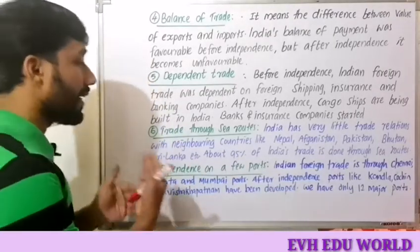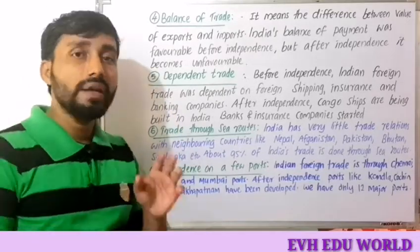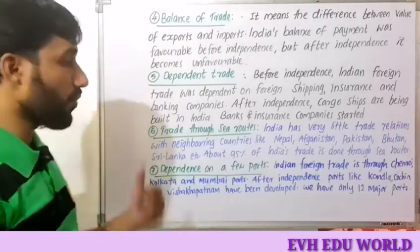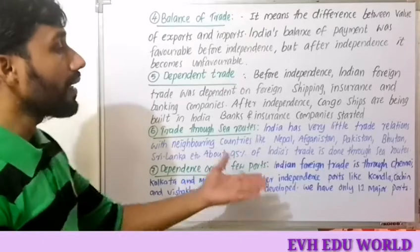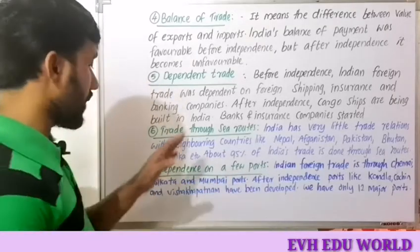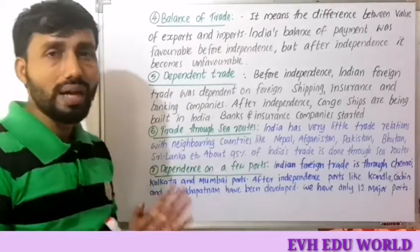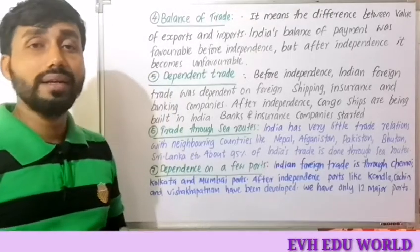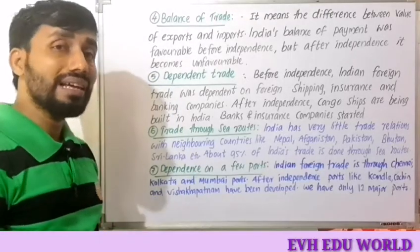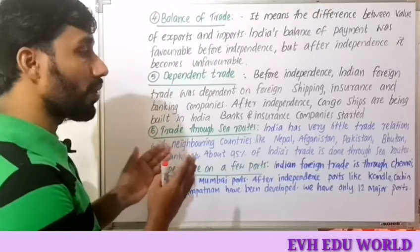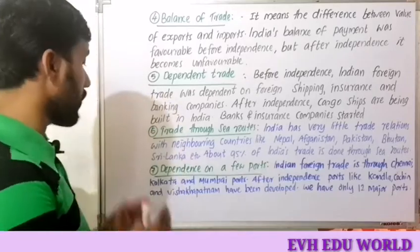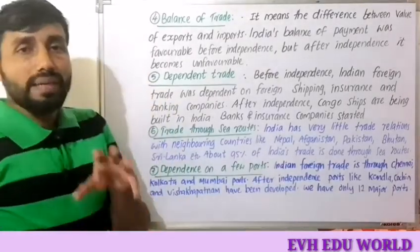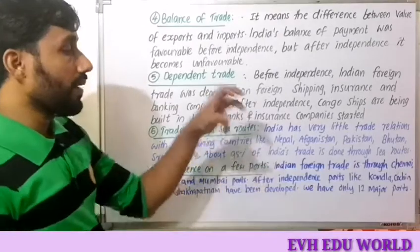The next feature is dependence on few ports. Before independence, Indian foreign trade passed through Chennai, Kolkata, and Mumbai ports — just three ports. After independence, this developed, and now major trade is handled by about 12 ports.